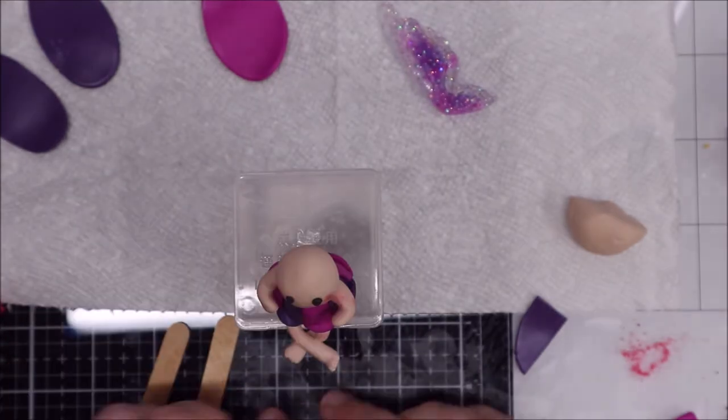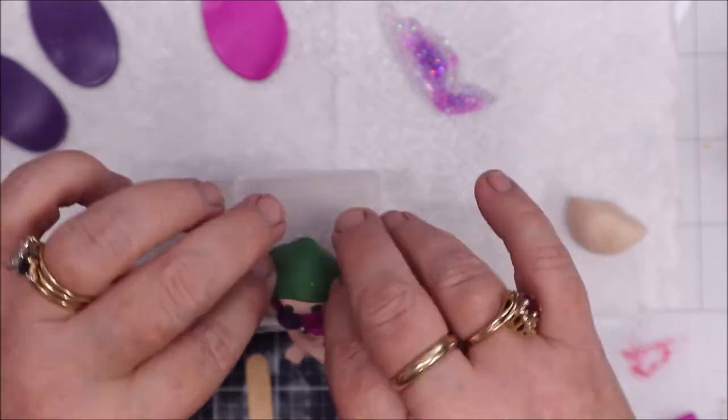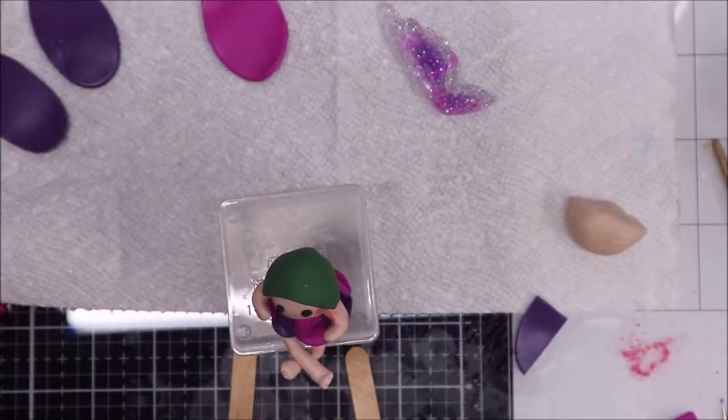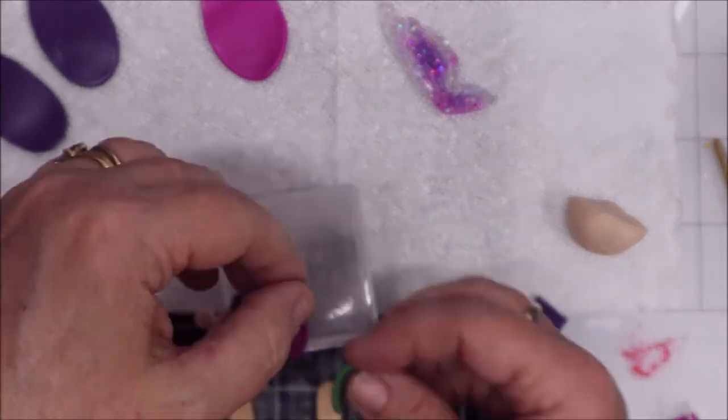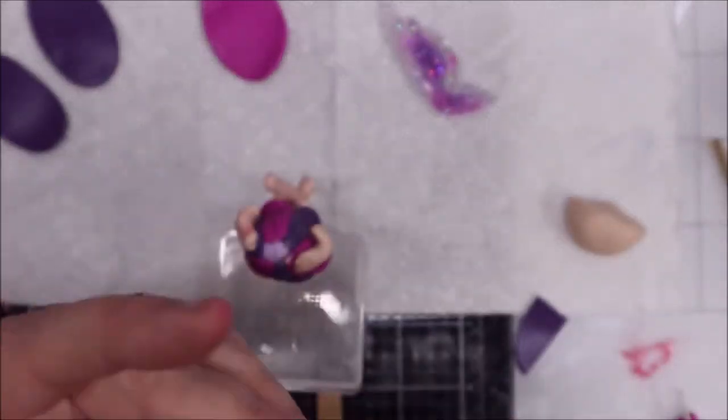So I use my pastel chalks to make her little cheeks and black clay to do her little eyes. Here I'm making her hair and I just put like a cap on her with the green clay and I kind of make her little bangs the way that I want them to.